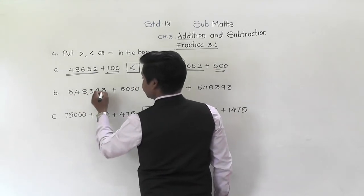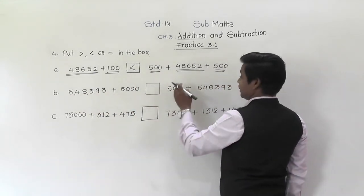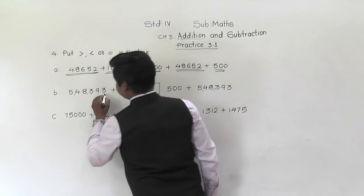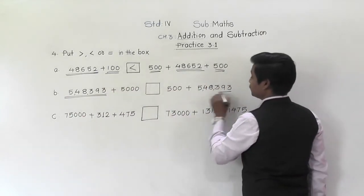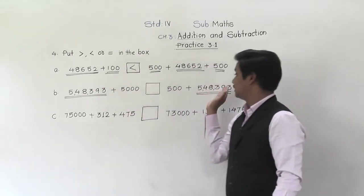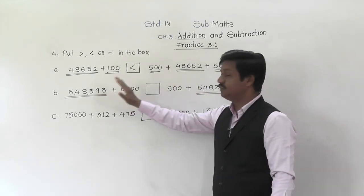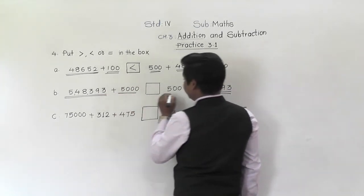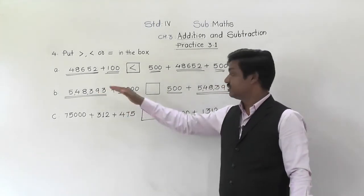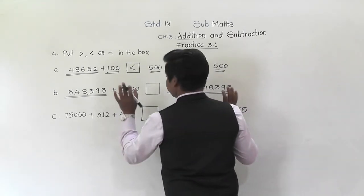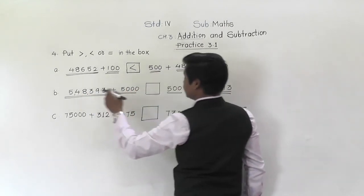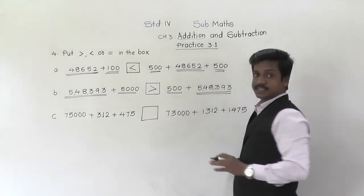Next: 5,48,393 plus 5,000 on the left side, and 500 plus 5,48,393 on the right side. The number 5,48,393 is common on both sides, so we only need to compare 5,000 and 500. 5,000 is greater, so the sum on the left side is obviously greater than the sum on the right side.